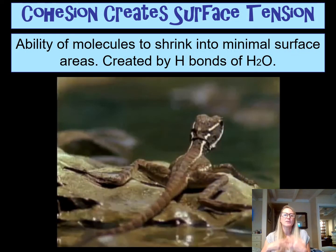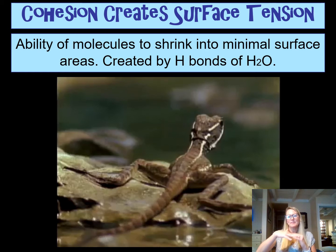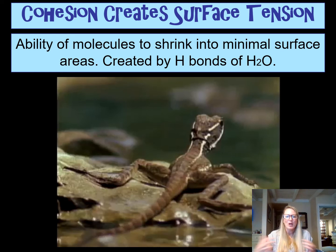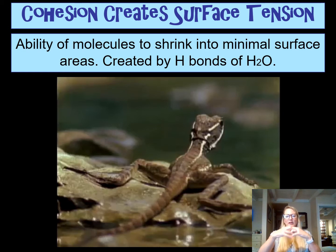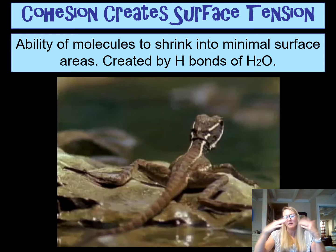Cohesion also explains what we saw with the Jesus Christ lizard. Cohesion creates surface tension — it creates an ability where smaller creatures can appear to walk on water because the water molecules hold each other in place through hydrogen bonding. When that surface tension is created, it allows things to sit on top of it.